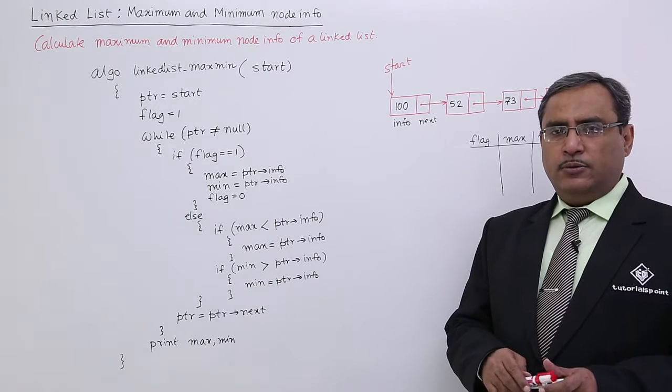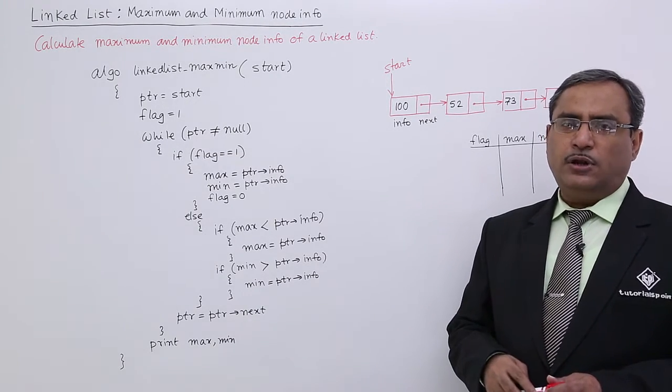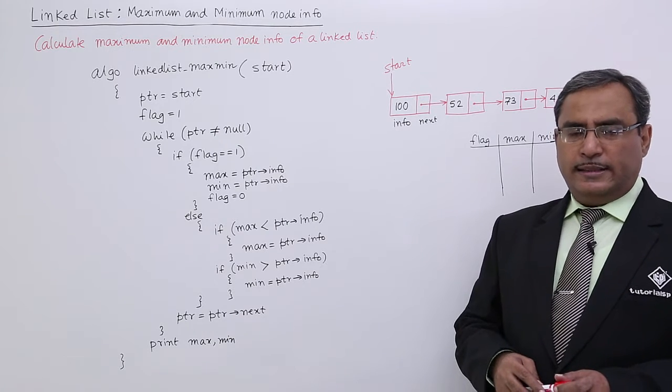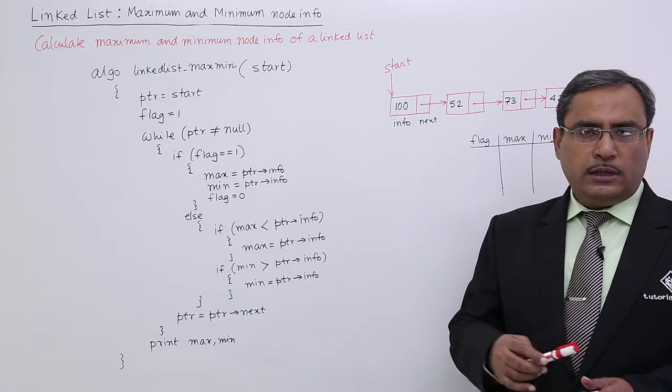While ptr is not equal to null, that means until ptr is not getting equal to null—until the total linked list has not been traversed—we should continue with the while construct.